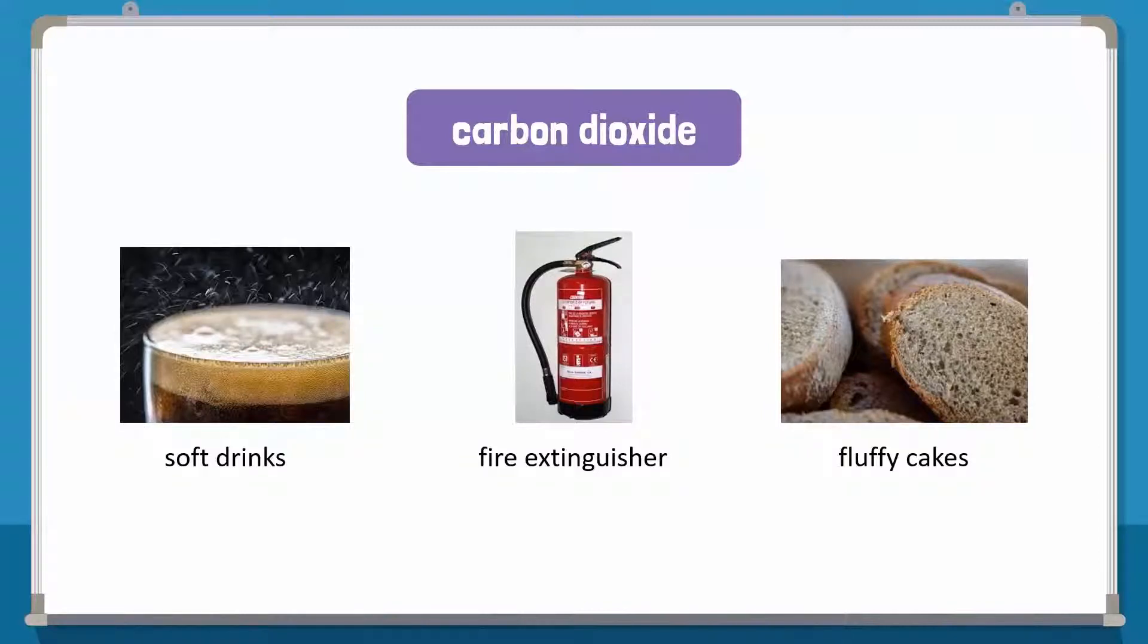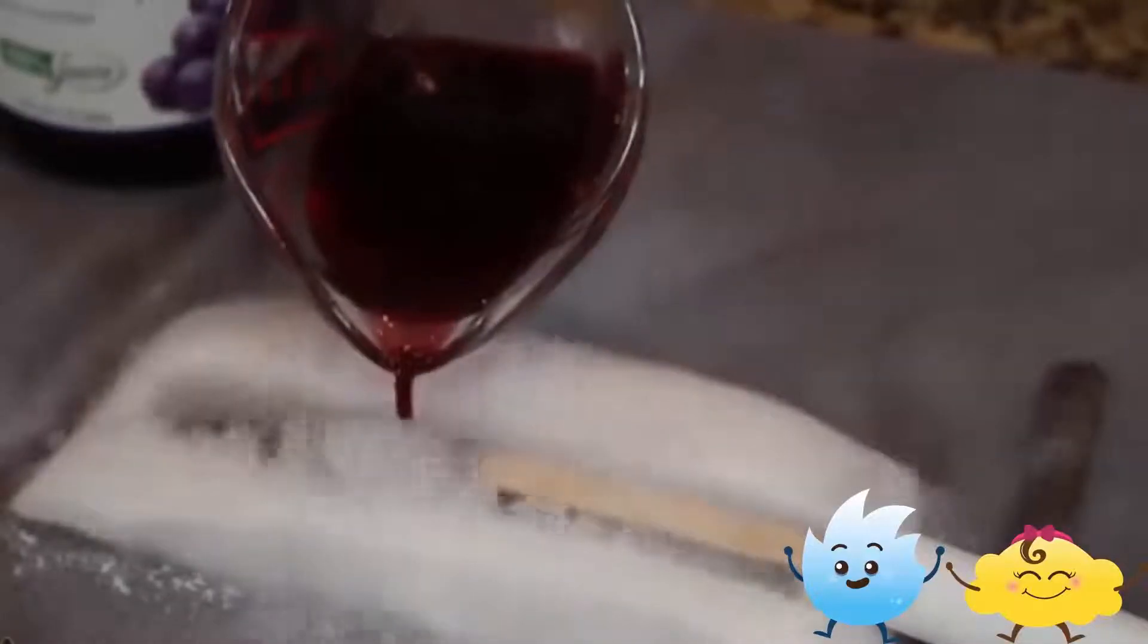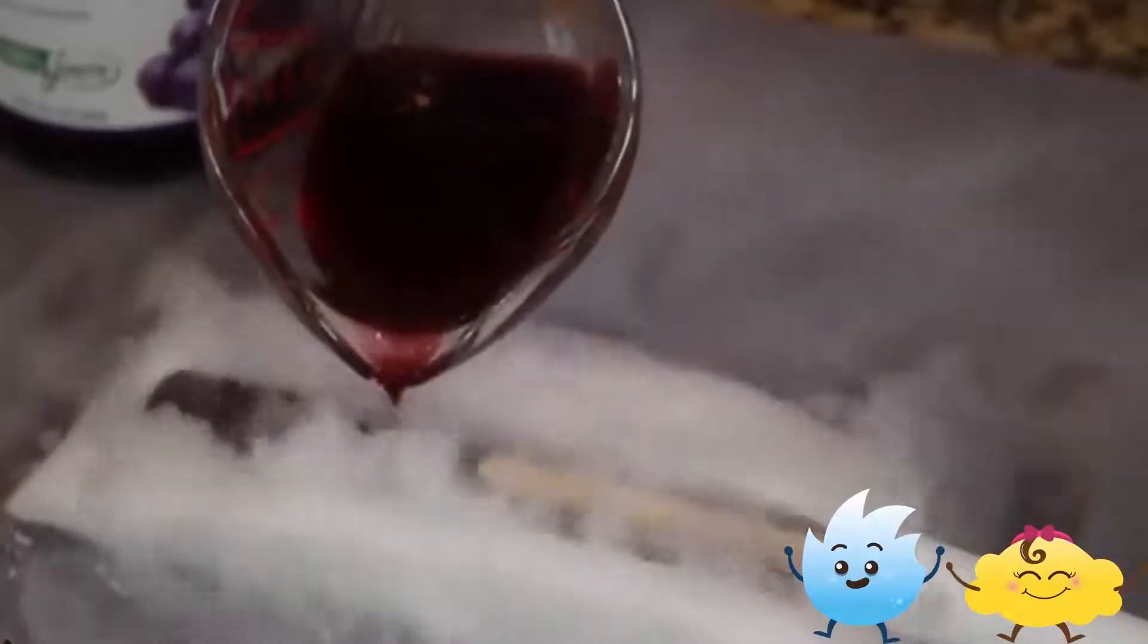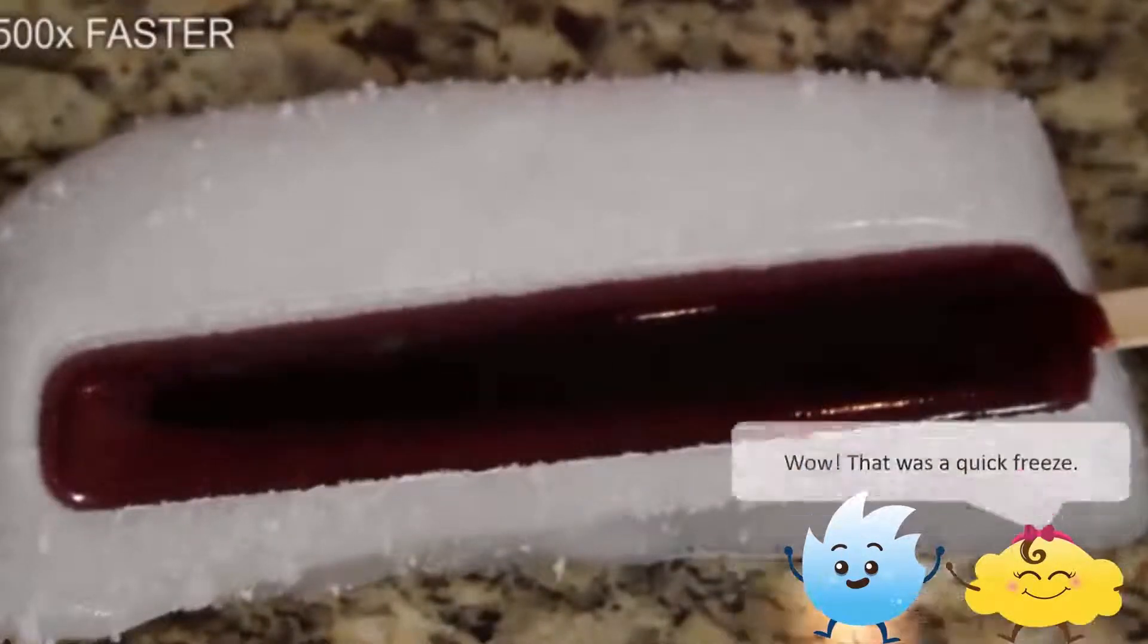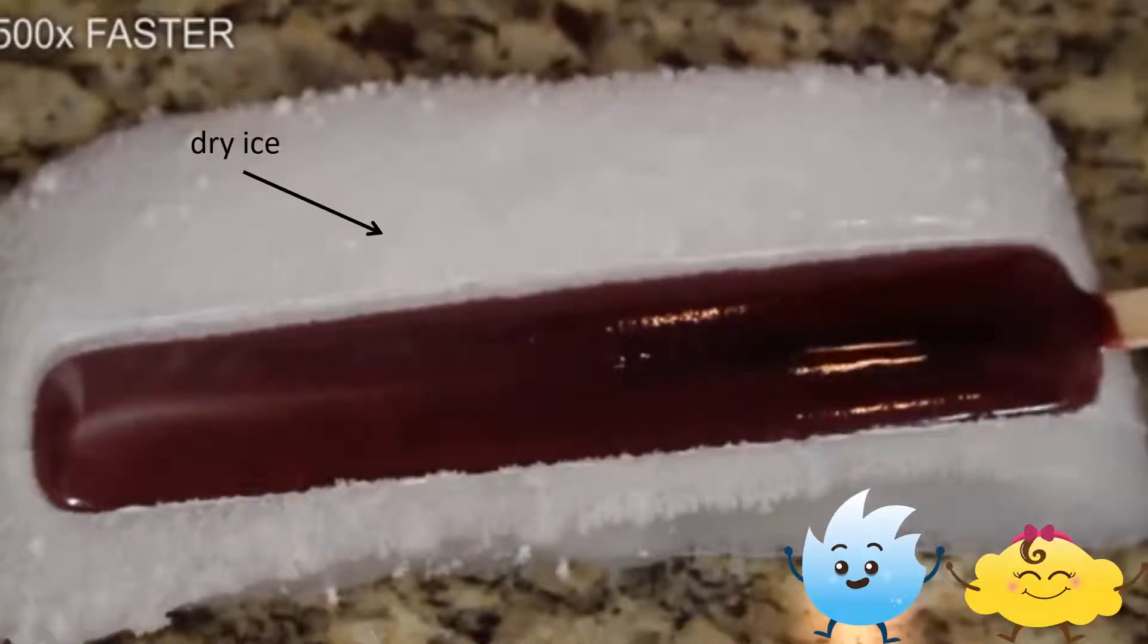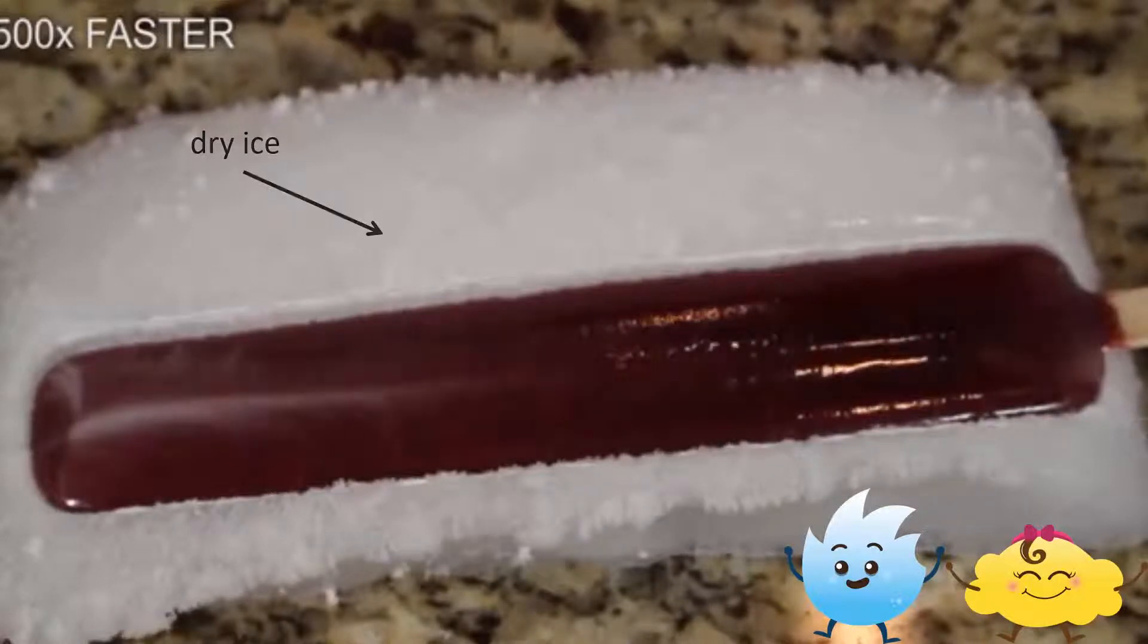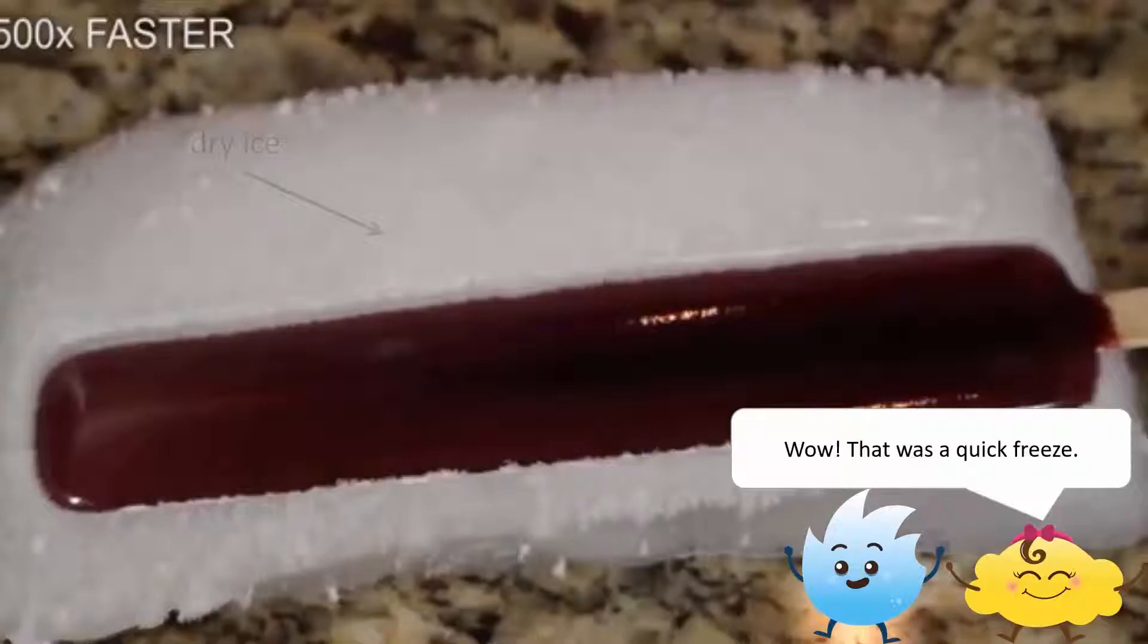Do you want to see more magic? That is a quick freeze. Can you guess what's doing this? This is carbon dioxide. Carbon dioxide is easily frozen into its solid form which is called dry ice. Dry ice is used to preserve food.